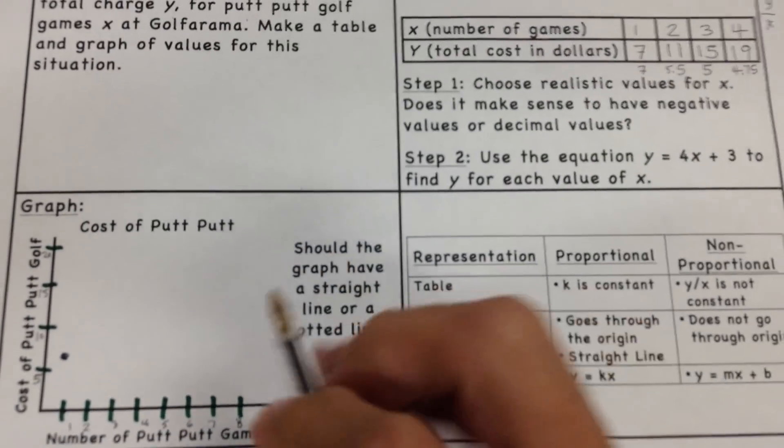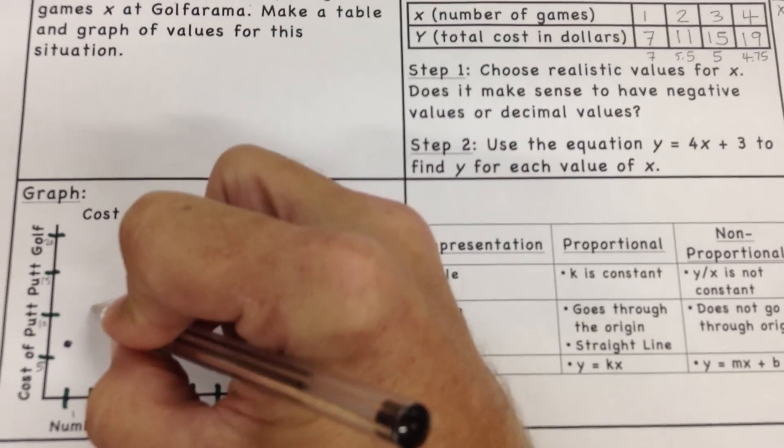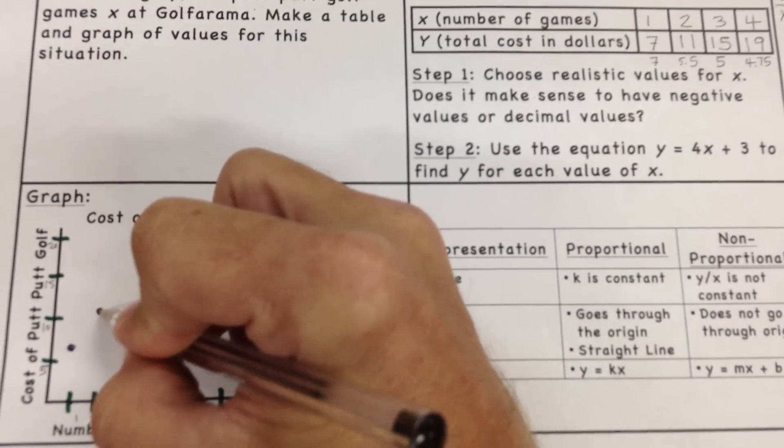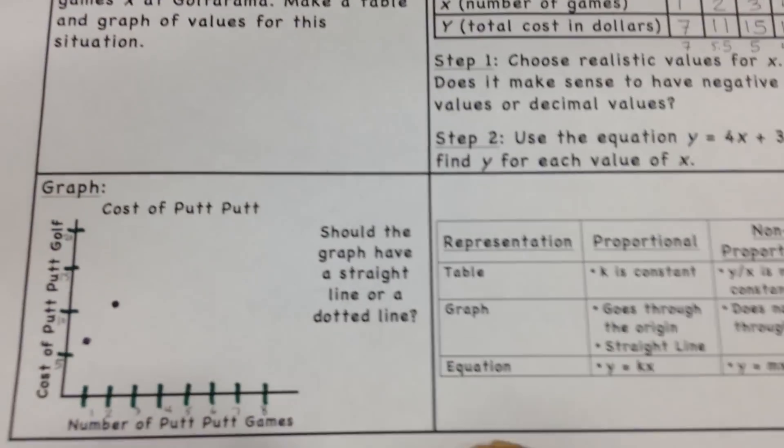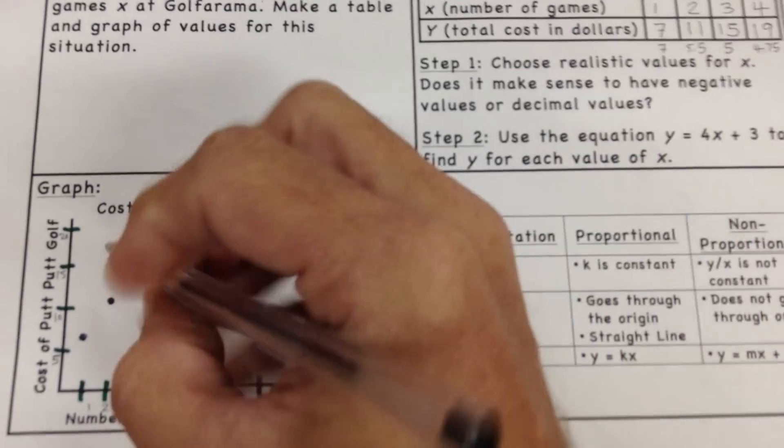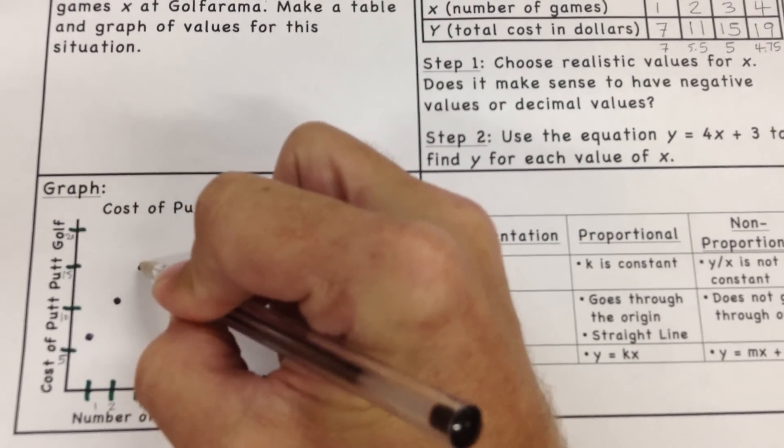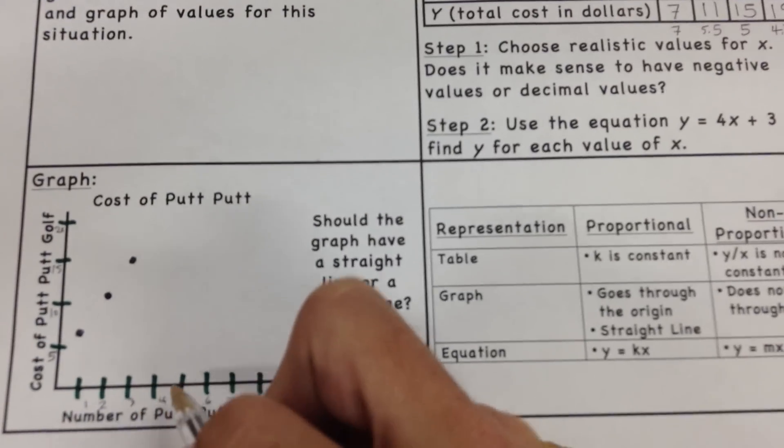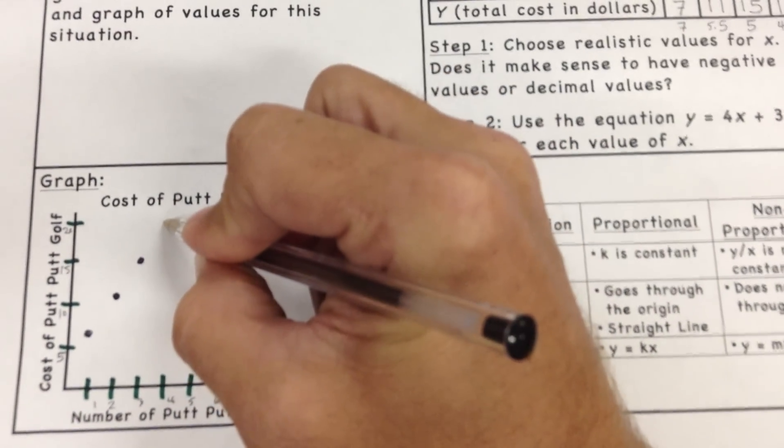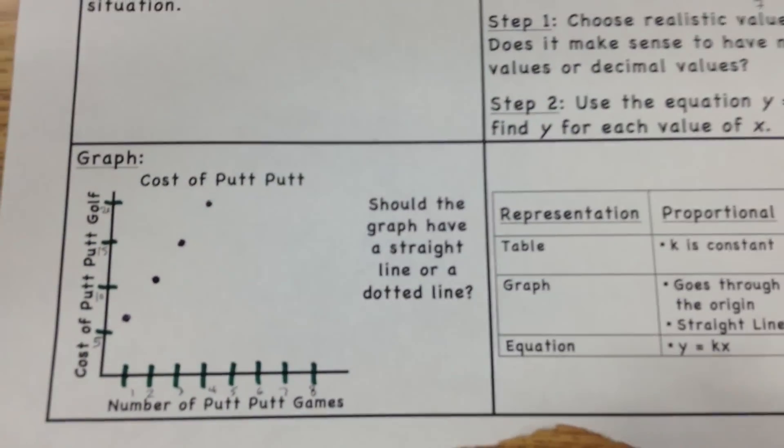The next one, 2, 11. Well, 2 is here. 11 would be about right here. So the cost for 2 games is $11. If we look up here, the cost for 3 games is $15, which is right here. The next one, the cost for 4 games is up here at $19. And we can see that this makes a straight line.